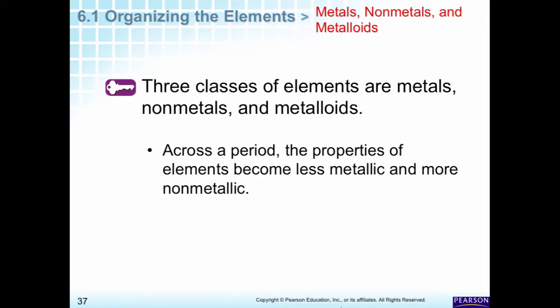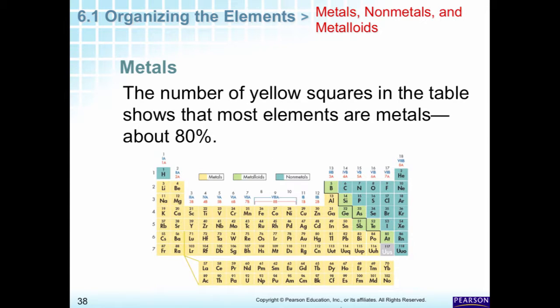As a review, the three classes of elements are metals, nonmetals, and metalloids — another very good test question. As you go across a period, elements become less metallic and more nonmetallic. As you go down a column or group, they get more metallic. 80% of our elements are metals.